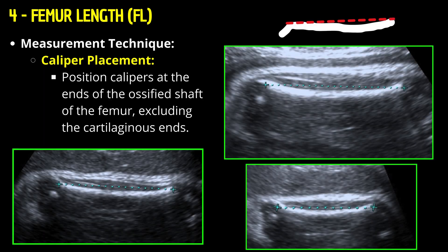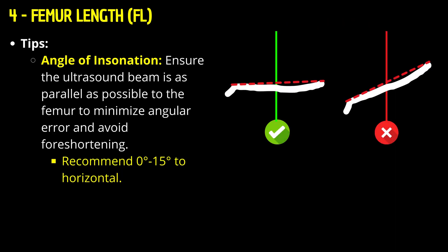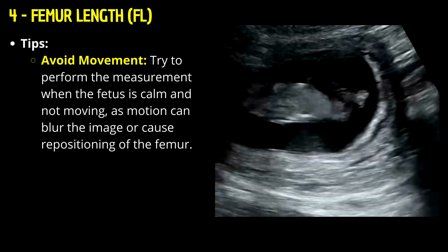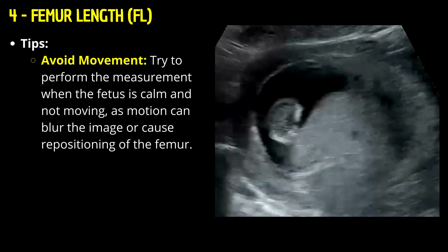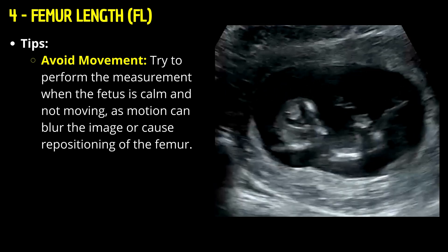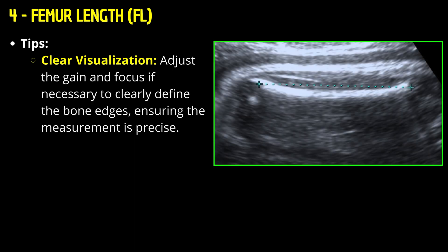Measurement technique for FL: Position calipers at the ends of the ossified shaft of the femur, excluding the cartilaginous ends. Ensure the ultrasound beam is as parallel as possible to the femur to minimize angular error and avoid foreshortening. Try to perform the measurement when the fetus is calm and not moving, as motion can blur the image or cause repositioning of the femur. Adjust the gain and focus if necessary to clearly define the bone edges, ensuring the measurement is precise.